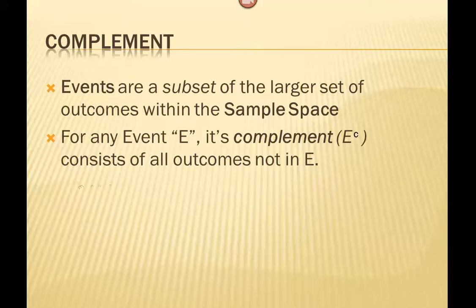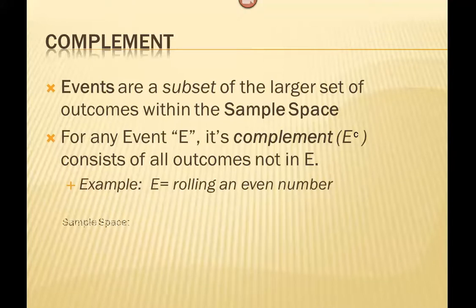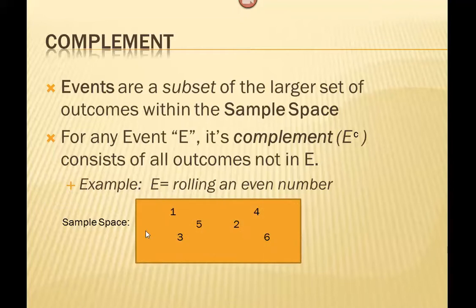For example, if our event is rolling an even number, we'd first want to look at our sample space. Our sample space contains every possible outcome on a six-sided die, so 1 through 6. We can represent our event, rolling an even number, as a smaller set of this bigger set. The big rectangle here represents our sample space. If you're drawing a Venn diagram, you want to first draw out a rectangle to represent all your possible outcomes. Then, within that, we can list our outcomes, and this becomes a smaller subset of that.